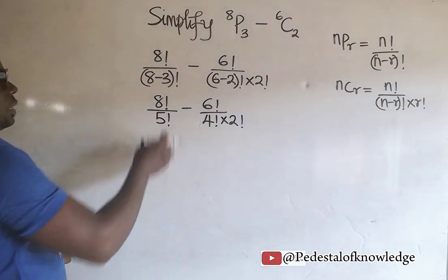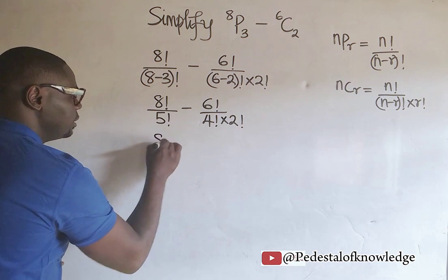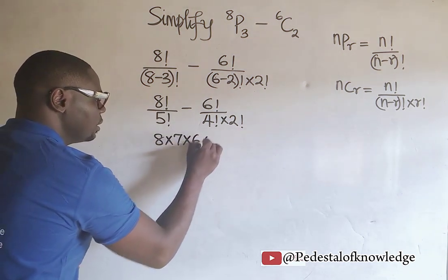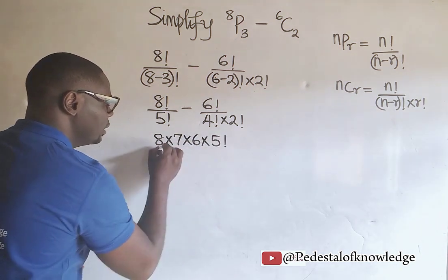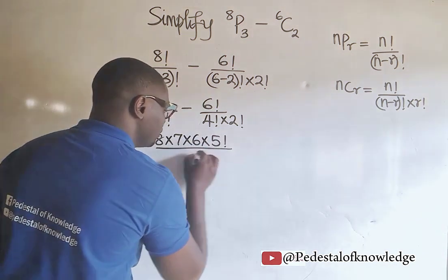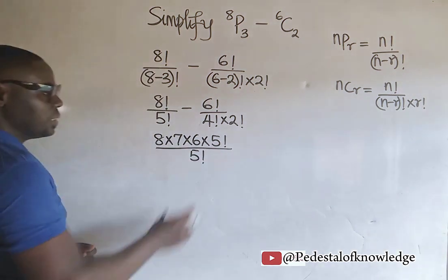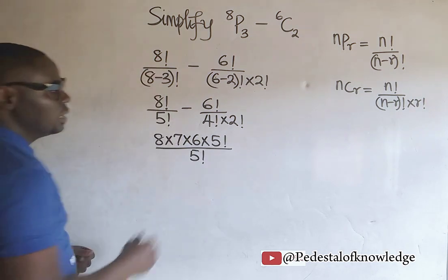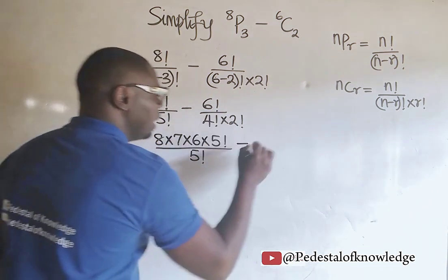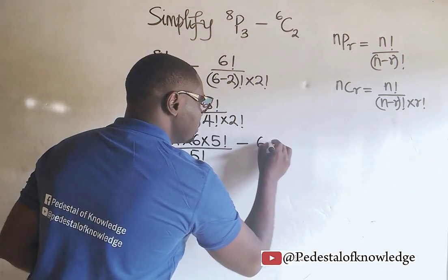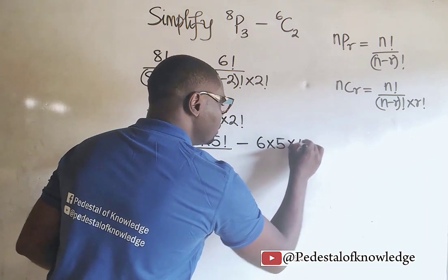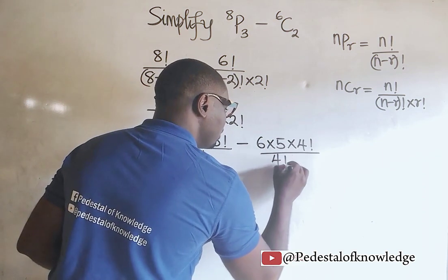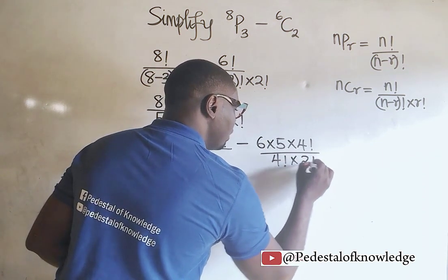Remember that 8 factorial can be expressed as 8 times 7 times 6 times 5 factorial, then divided by 5 factorial. The reason for stopping at 5 factorial is because we have 5 factorial below which can easily cancel out. Then minus, here we have 6 times 5 times 4 factorial divided by 4 factorial multiplied by 2 factorial.